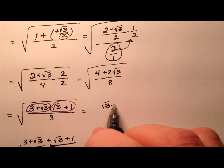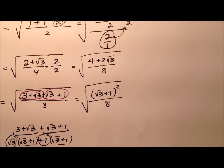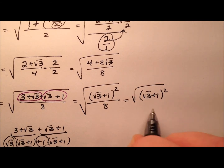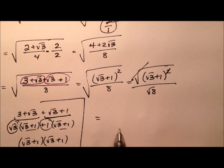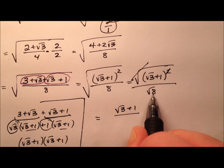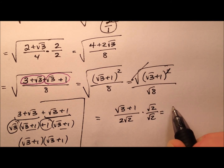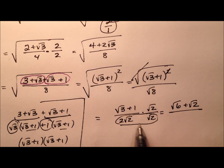Putting that back, I have the square root of (square root of 3 plus 1) squared, all over 8, under the radical. Splitting this into two pieces, the square and the square root cancel in the numerator, leaving square root of 3 plus 1, all over the square root of 8, which reduces to 2 radical 2. A final step of rationalizing the denominator gives us the square root of 6 plus the square root of 2, all over 4.